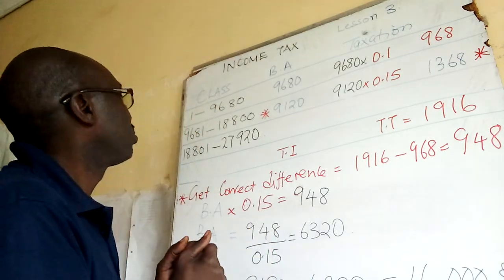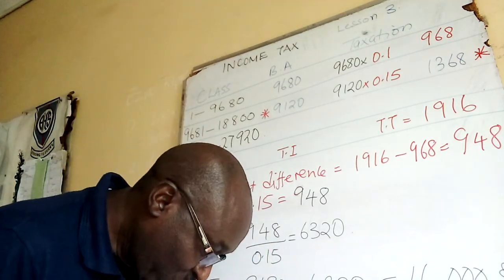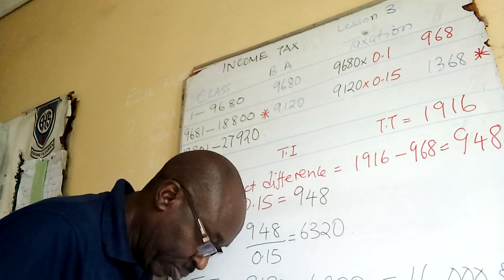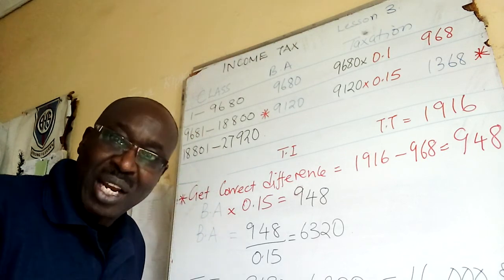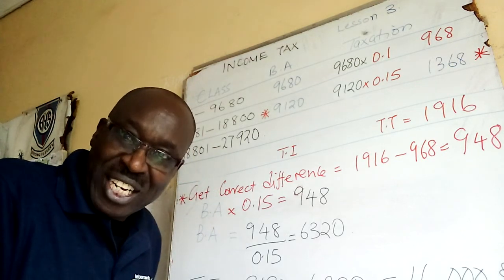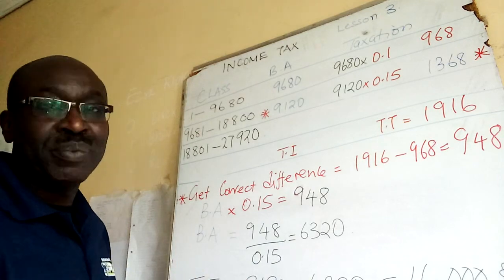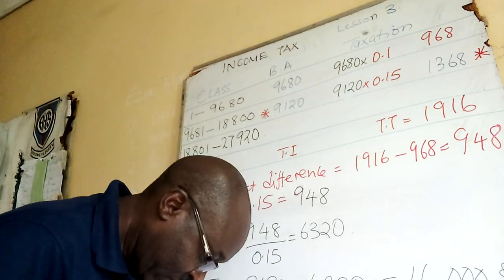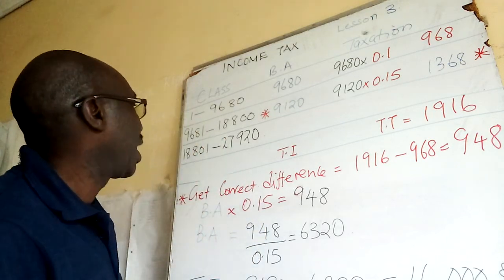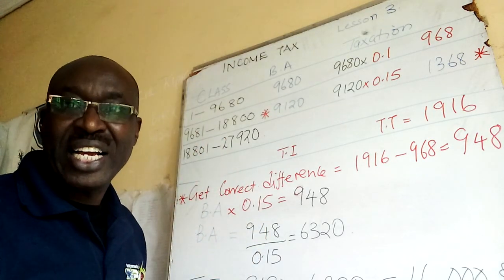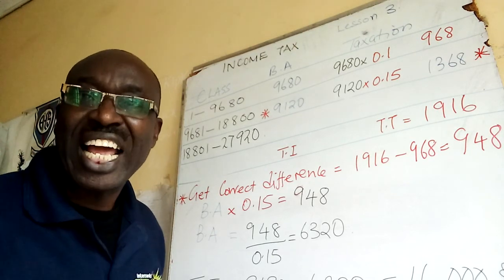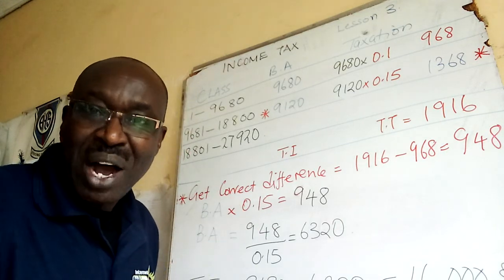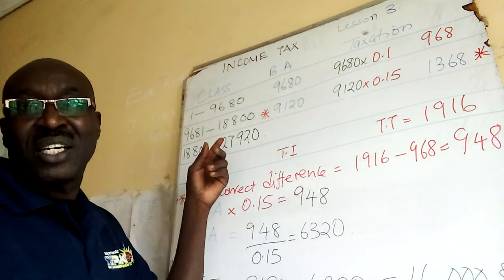The table can also be given indirectly, so you put it into comprehensible classes that you understand very well. We are also told the lower limit of Class 2 is 9,681, and the upper limit of Class 2 becomes 18,800.